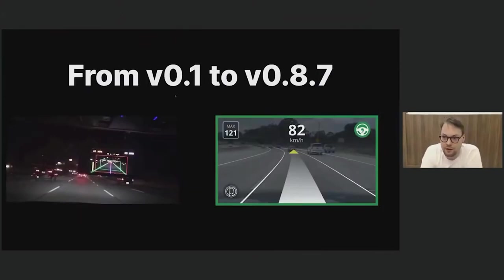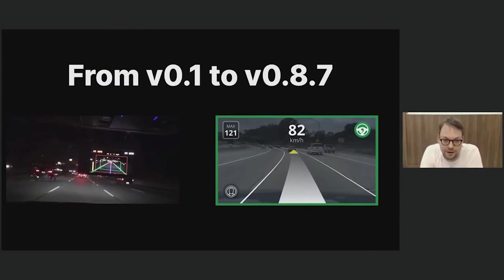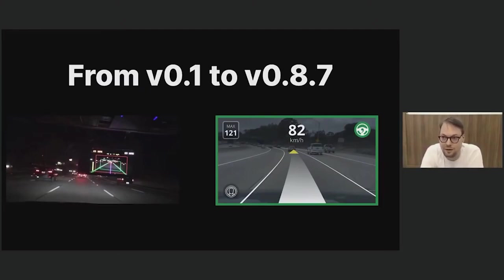This shows us very nicely how far we've come from version 0.1 to version 0.8.7. Sometimes progress feels slow, but it's always good to take a step back and see how far we've come. If we can get this much out of 2016-era smartphone hardware, that proves our point that this is just a software problem — and if we just keep chipping away at the software, it's just going to keep getting better and better.